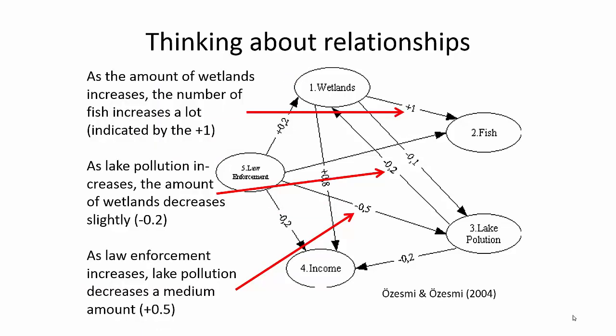When thinking about these relationships, we can begin to model systems using these different values. From the first example, as the amount of wetlands goes up, it has a strong positive relationship on the number of fish — that's why there's a positive 1 there. In the second example, as lake pollution increases, the amount of wetland decreases, but only slightly, represented by 0.2. We can also think about law enforcement: as it increases, lake pollution decreases about a medium amount.